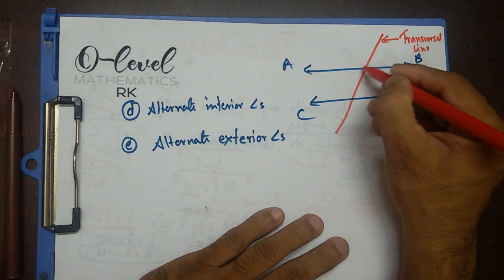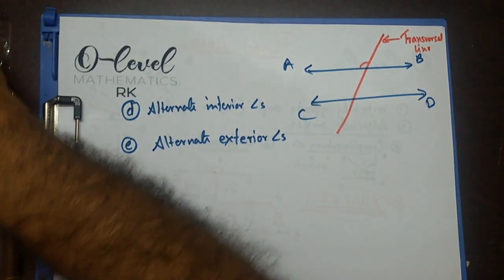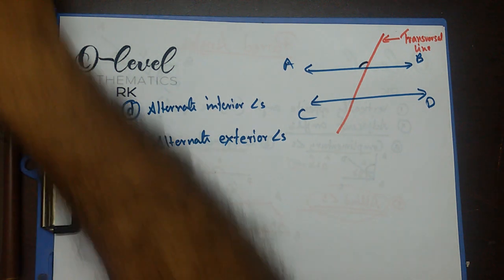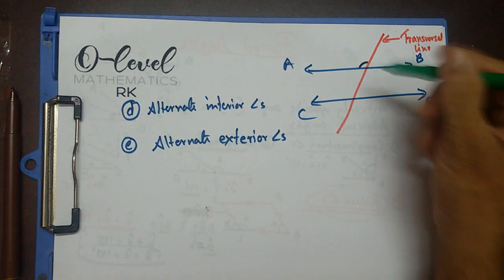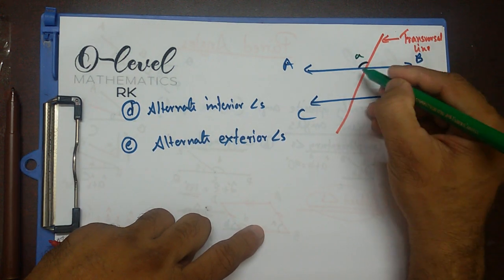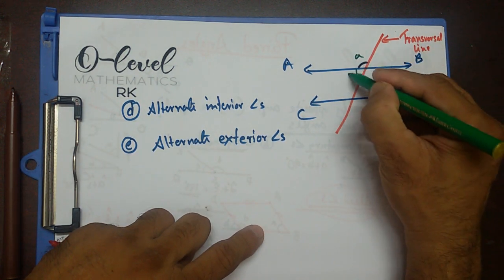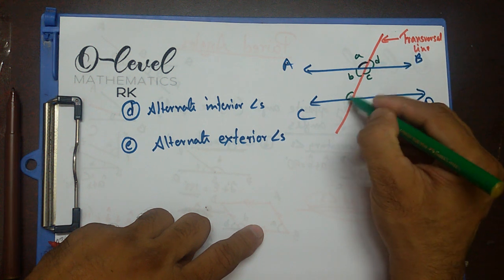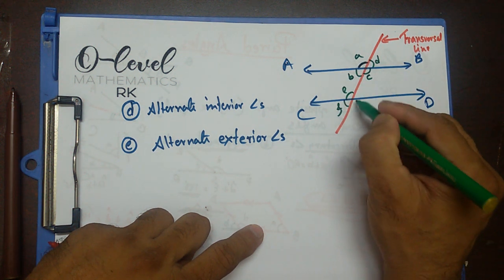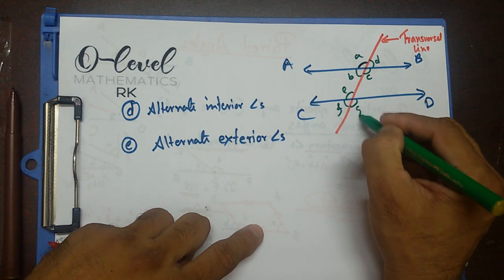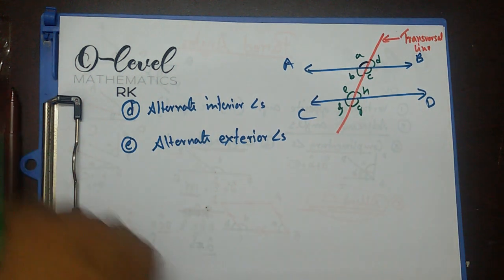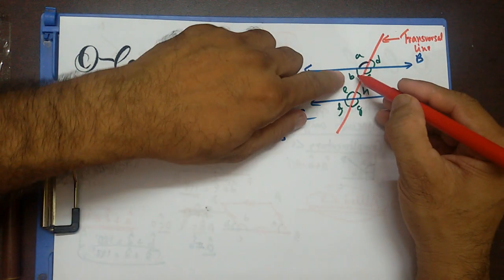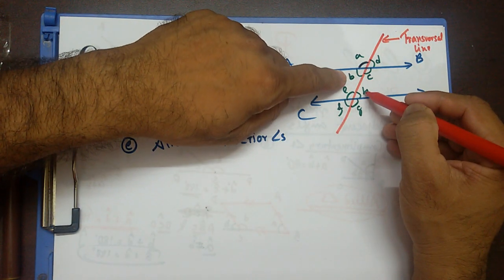The transversal forms several angles. Let me write those down with a different color: A, B, C, D, E, F, G, H. Now this is the transversal line. Look at B and H.